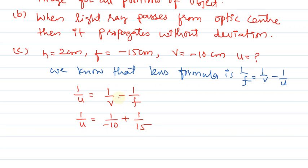It's plus because minus times minus 15. So the LCM is 10 times 15, which is 150. So the numerator will be minus 15 plus 10.